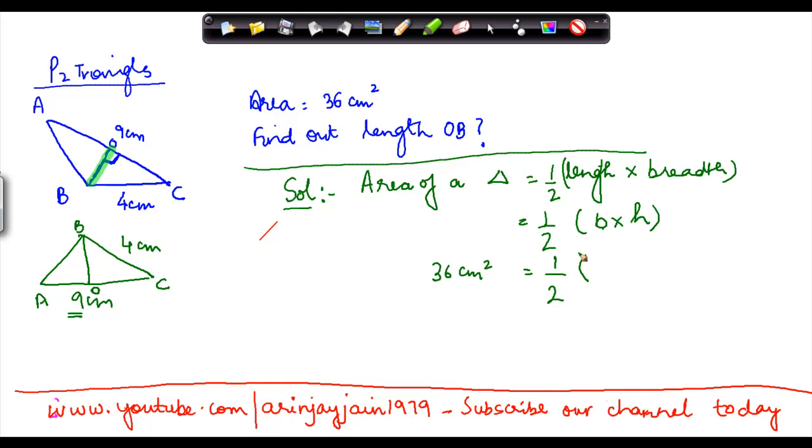If I multiply both sides by 2, this 2 goes off with this 2, so 9 times the height is equal to 72 centimeters squared.